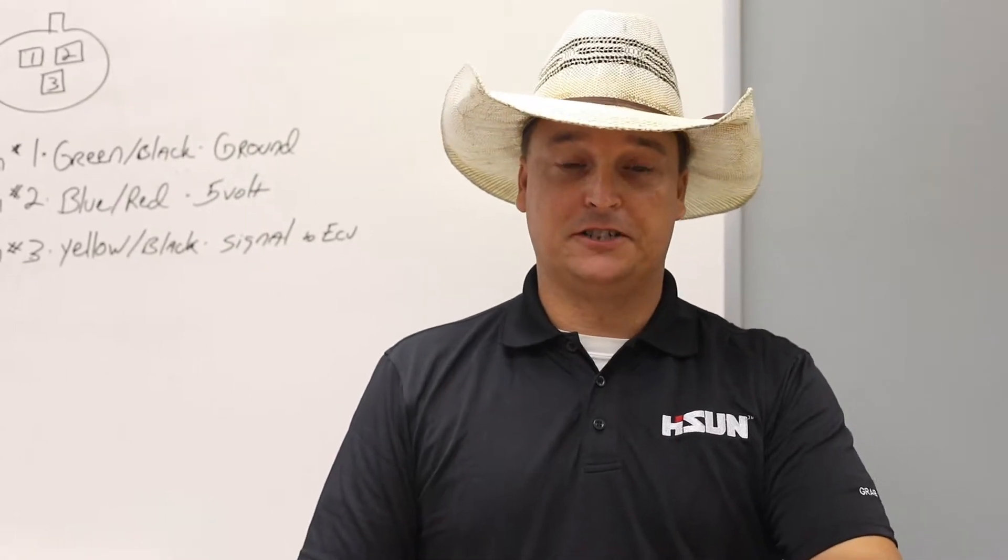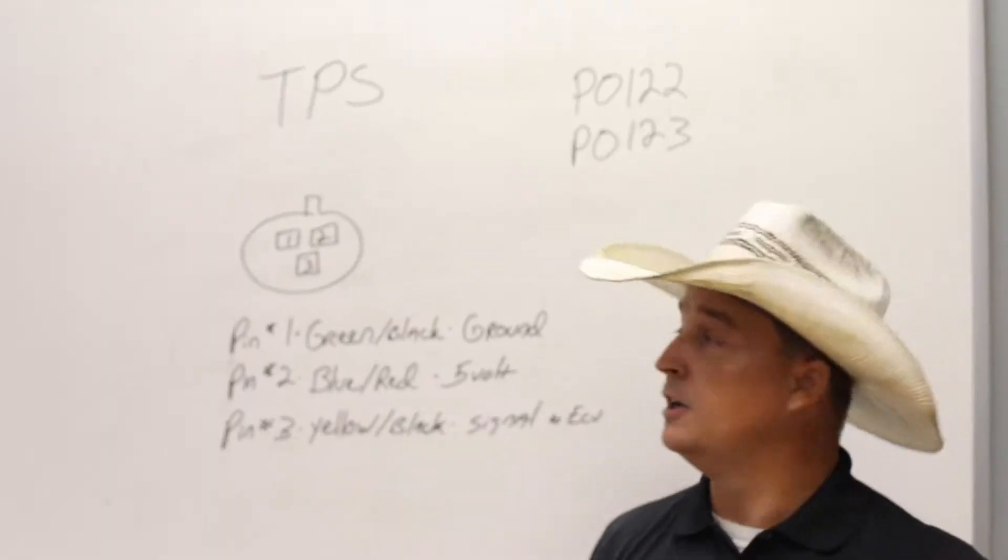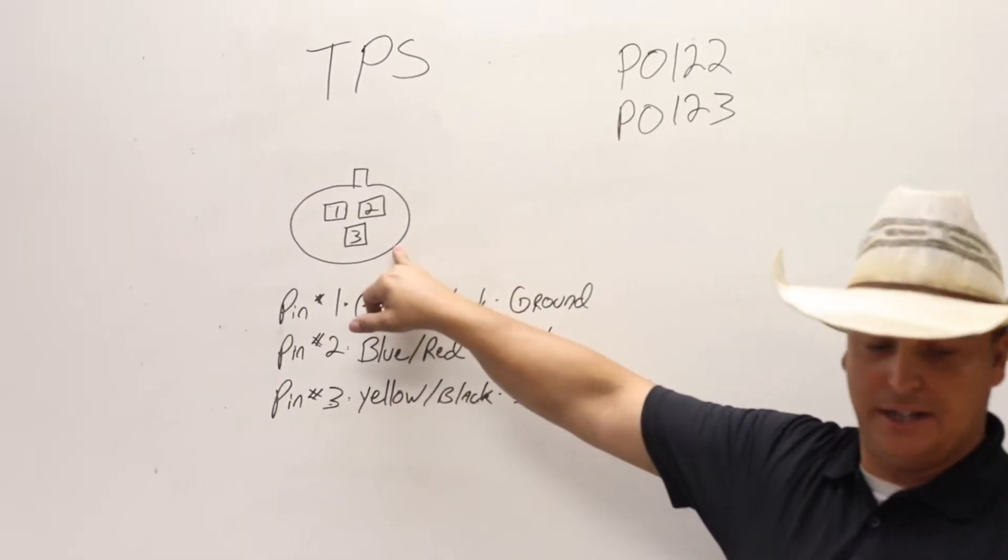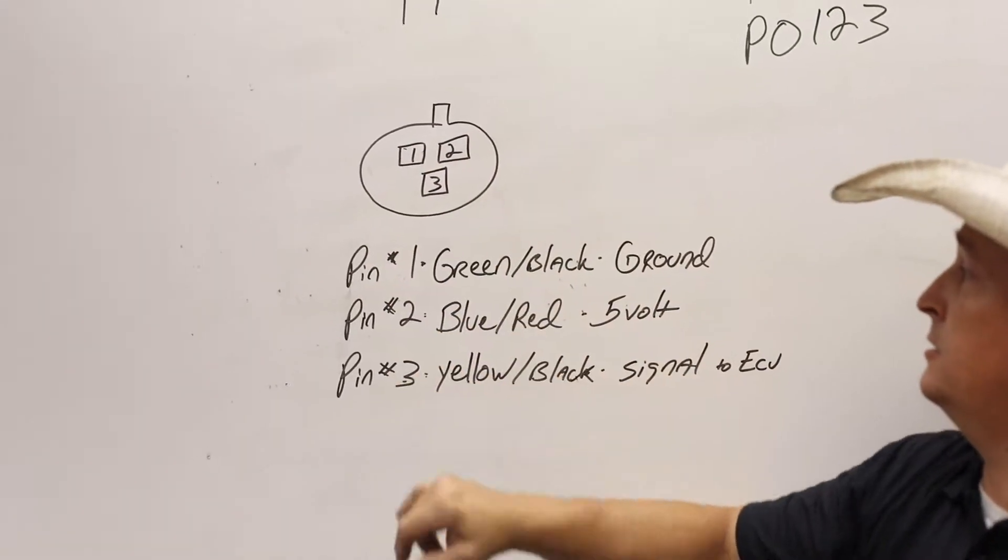Today we're going to test the throttle position sensor, the TPS. The TPS plug looks like this. It's going to be round with three wires.